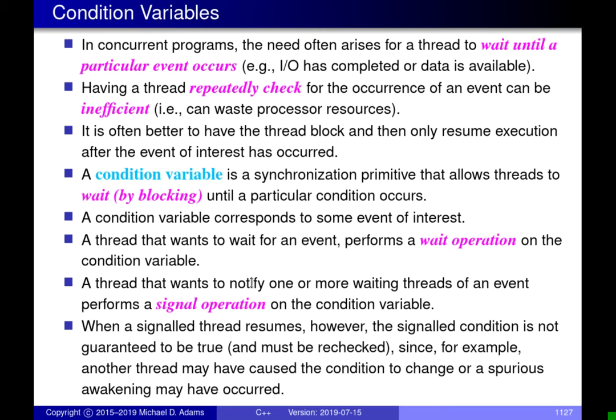What we'd like is for the thread to block itself, put itself to sleep, and not wake up until the data is available. This is the idea embodied by condition variables. Condition variables are a synchronization primitive that allows a thread to block waiting for a particular event to happen — for a particular condition to become true.